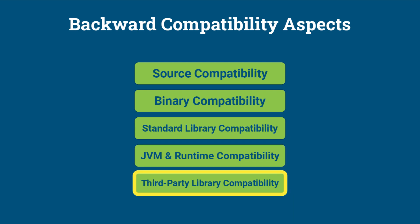Third-party library compatibility. Java 11 strives to maintain compatibility with third-party libraries and frameworks that were built for Java 8, ensuring that applications using these libraries can be migrated to Java 11 without issues. For example, libraries like Apache Commons or Google Guava that were built for Java 8 should work on Java 11 without requiring updates.